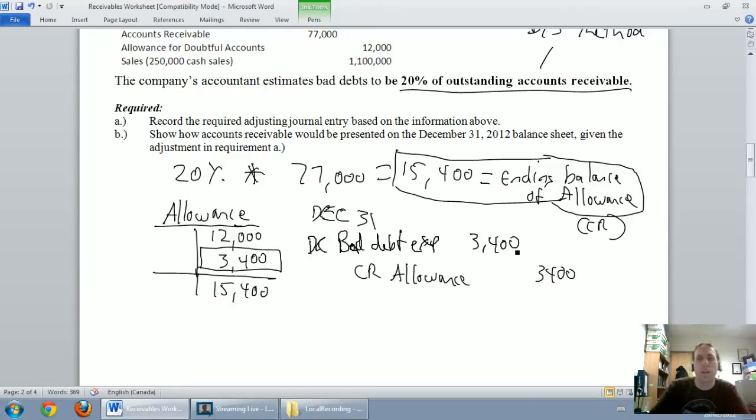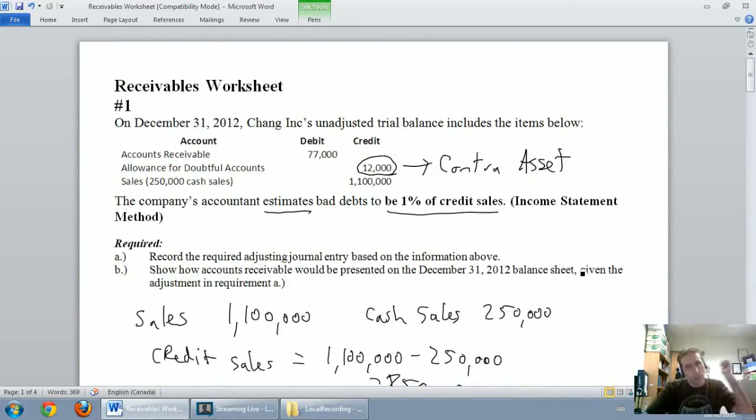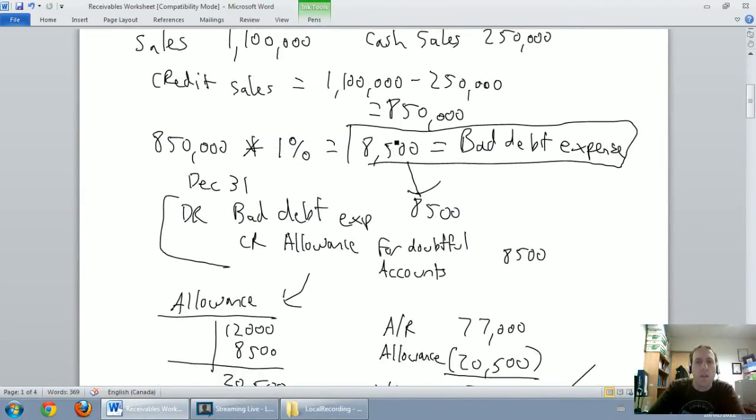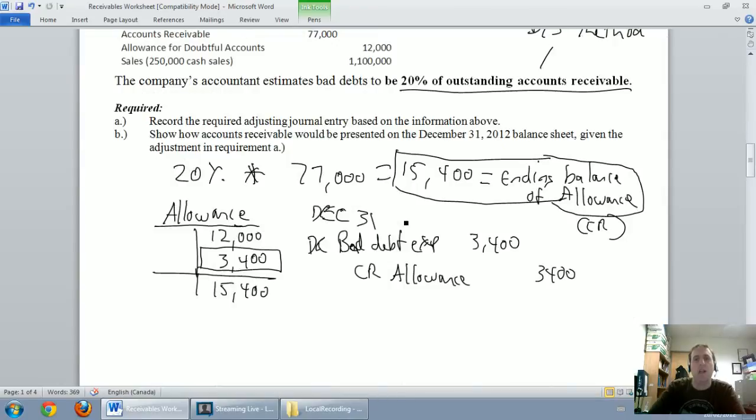So, just to reiterate the difference, when we're doing the income statement method, as we did in the video prior to this, we said the amount we calculate is our bad debt expense. Plug it into the journal entry. When we calculate based on a percentage of outstanding accounts receivable, that amount we calculate is the ending balance of our allowance for doubtful accounts. That amount needs to go into a T account, and then we kind of work backwards to figure out our journal entry. So, again, I knew I started with $12,000 in my allowance. I knew I had to end with $15,400 credit balance. So, to go from a $12,000 credit balance to a $15,400 credit balance, I credit it $3,400. So, I credit my allowance $3,400, debit bad debt expense $3,400. I've got a good entry.